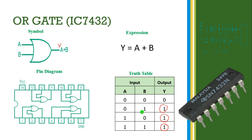In this truth table, if any one of the input values becomes high, the output value becomes high. That means if any one of the input values becomes 1, the output value becomes 1. The expression of the OR gate is Y equals A plus B — this is the addition operation.